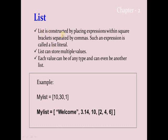A list is constructed by placing expressions within square brackets. For example: `my_list = [10, 30, 1]`. Another example has a string, a float like 3.14, an integer like 10, and even another list like [2, 4, 6] inside it. So a list can store multiple values of any type.